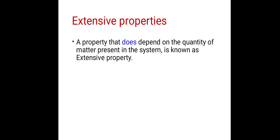Now we will see extensive properties. These extensive properties are just opposite to the intensive properties. A property that does depend on the quantity of matter present in the system is known as extensive property. Since extensive properties are opposite to intensive properties, extensive properties are additive properties.